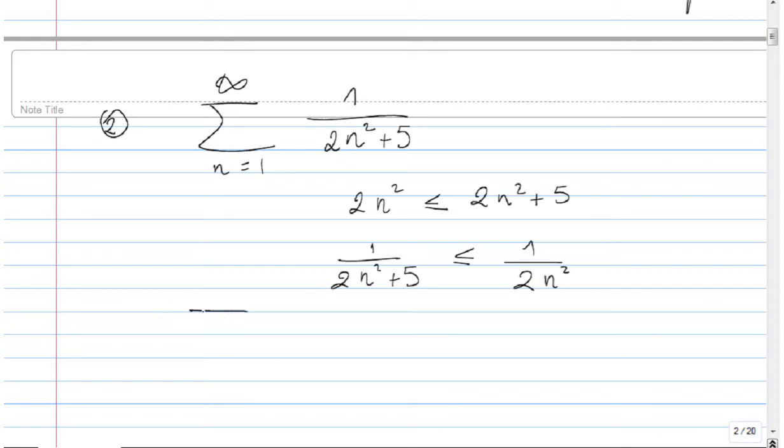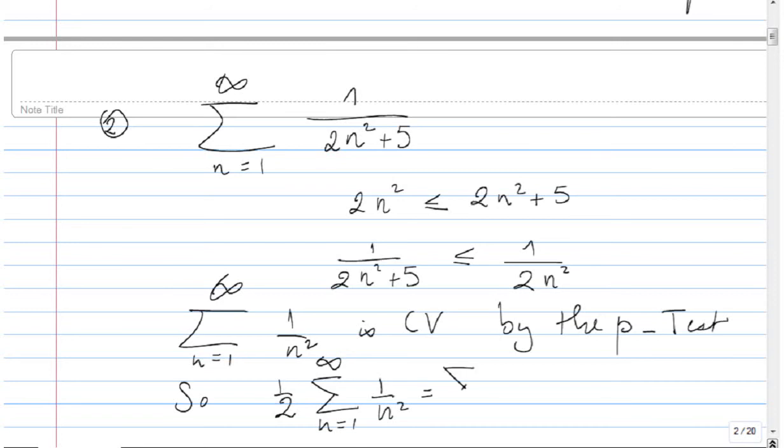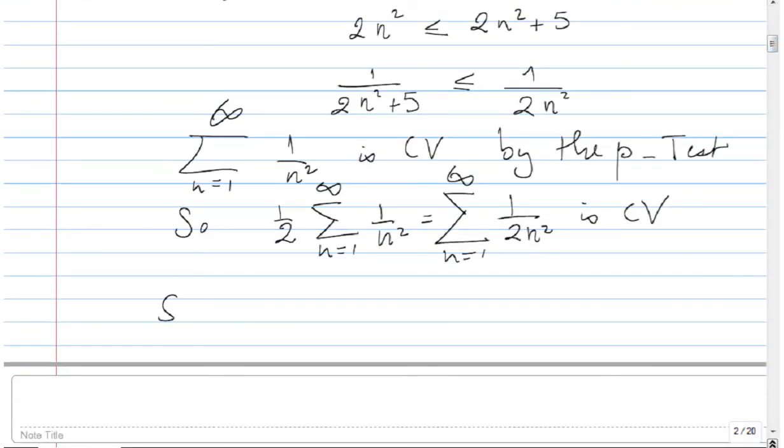And now we can use the p test again. Sigma from n equal 1 to infinity of 1 over n squared is convergent by the p test. So if I multiply by one half, I still get convergence using the algebra of convergent series. So Sigma of 1 over 2 n squared is convergent, and the small one is convergent by the basic comparison test.